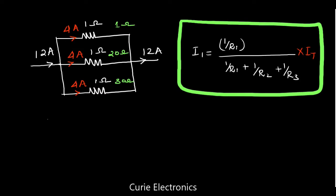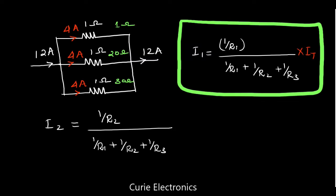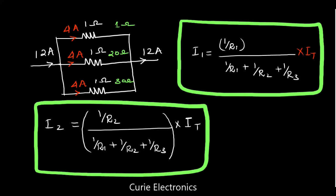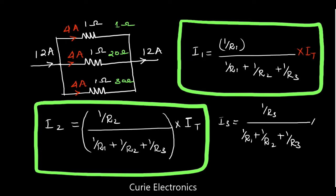Similarly, we can write for I2: I2 equals 1 upon R2, divided by 1 upon R1 plus 1 upon R2 plus 1 upon R3, and the whole thing multiplied by the total current. Similarly, we can write I3: I3 equals 1 upon R3, divided by 1 upon R1 plus 1 upon R2 plus 1 upon R3, multiplied by the total current.